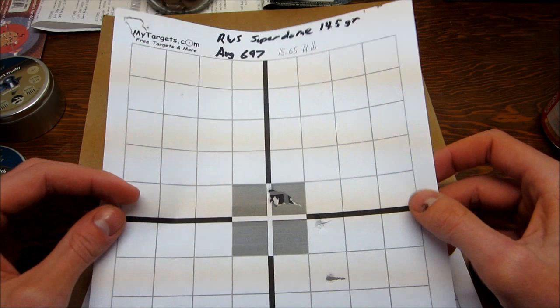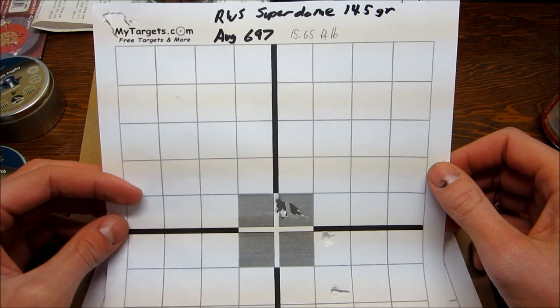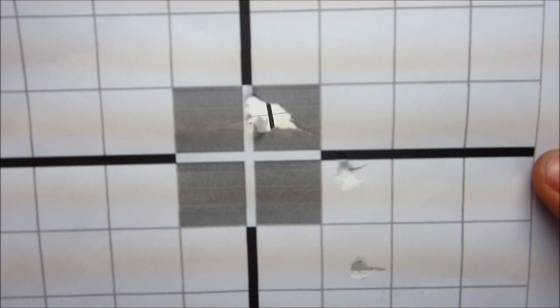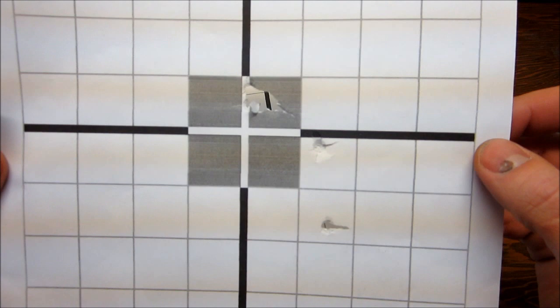This is the RWS Superdome averaged 697, and that's 15.65 foot-pounds. We got three shots in one hole and then two other ones. These seem to fit really loose in the gun, so I don't know if that's it or if they just don't like it.